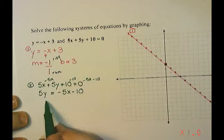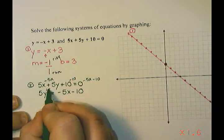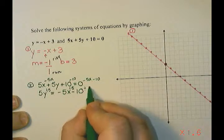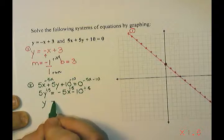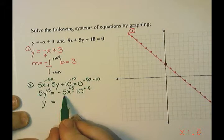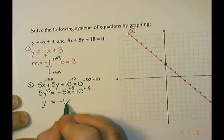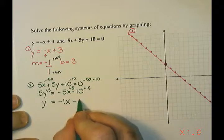And then I need to get the y by itself to isolate it, so I'm going to divide everything by the coefficient, which is 5. So 5 divided by 5 is 1y, or we just write y. Negative 5 divided by 5 is negative 1x. And then negative 10 divided by 5 is negative 2.